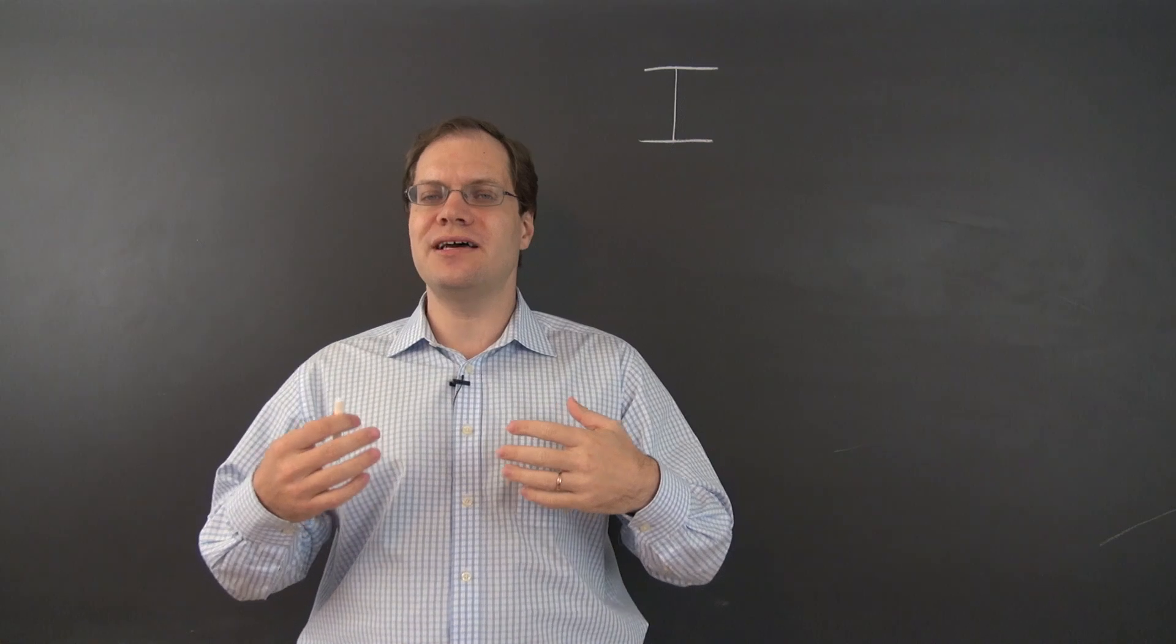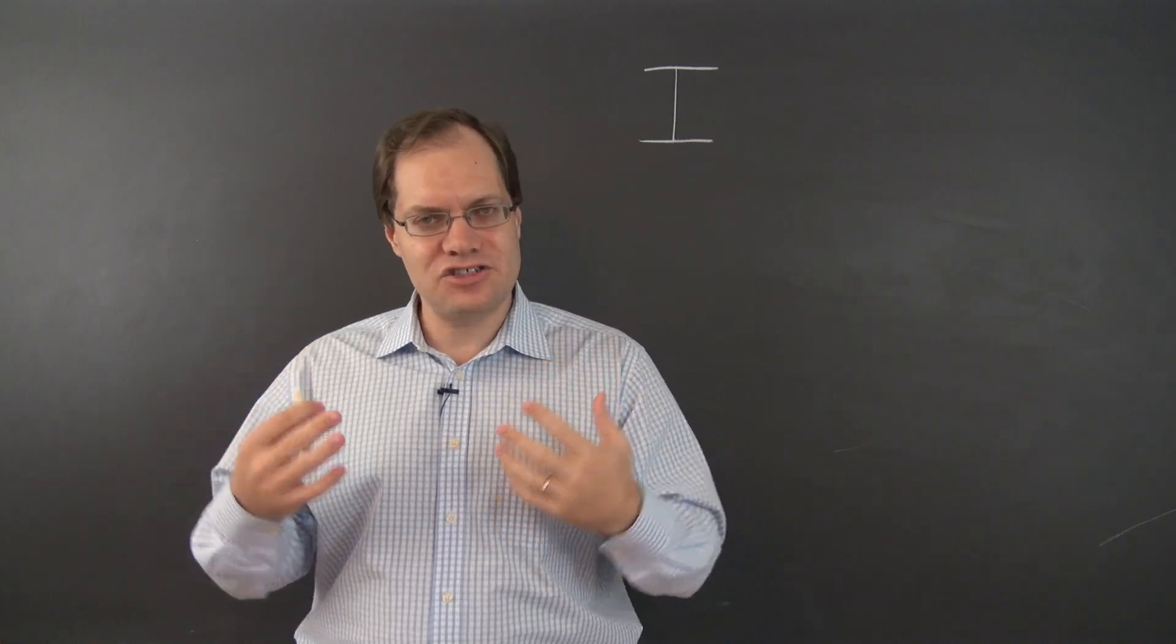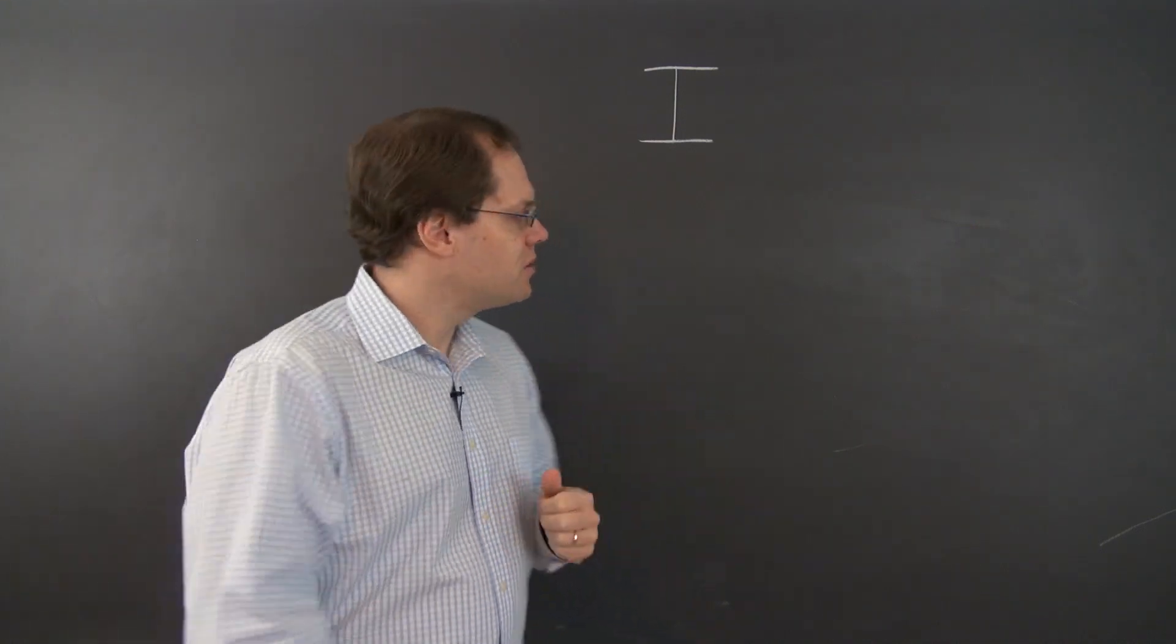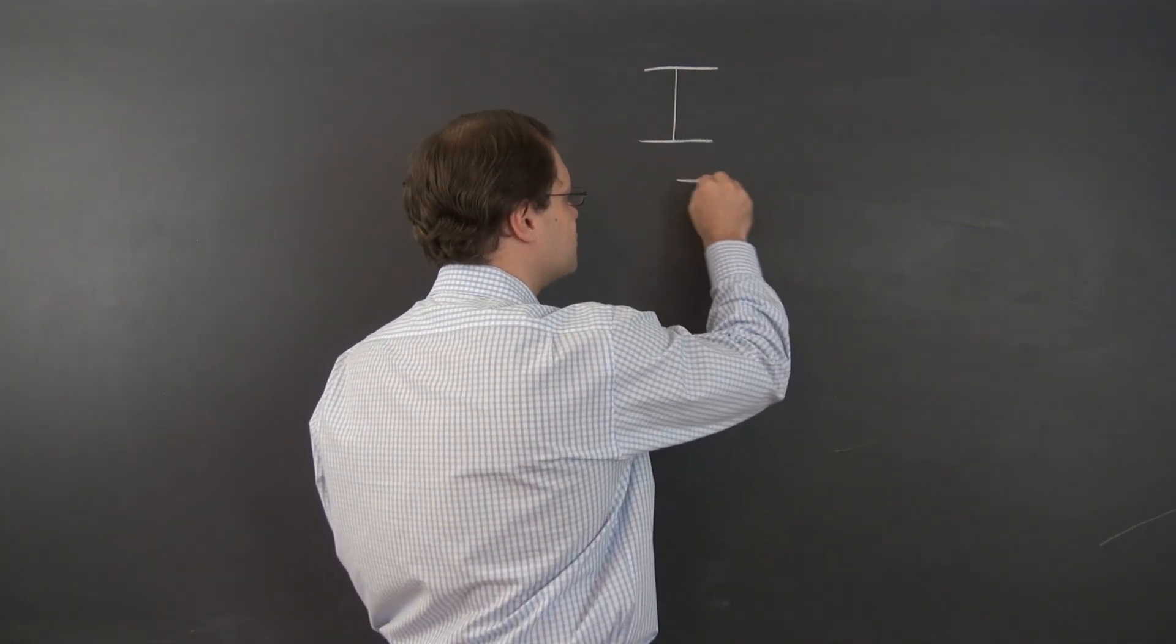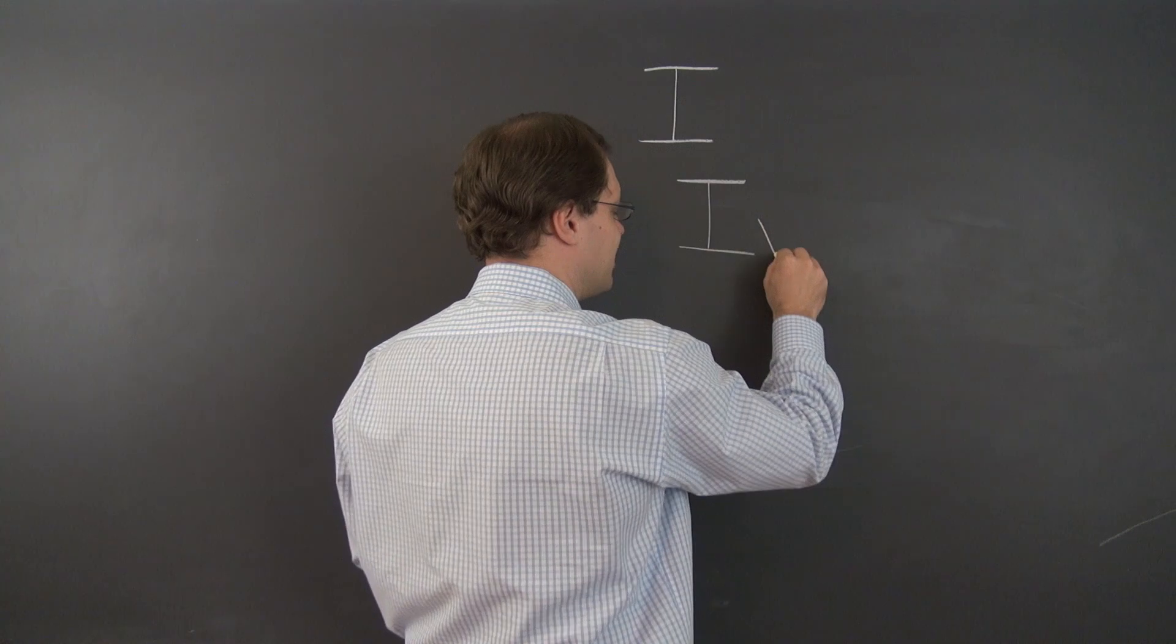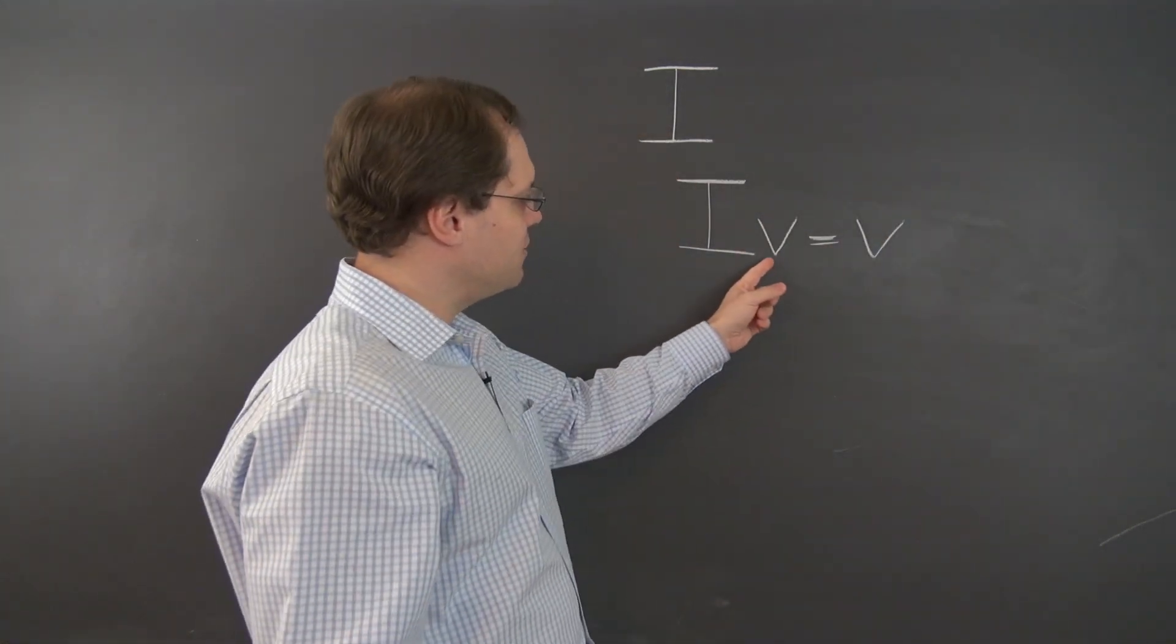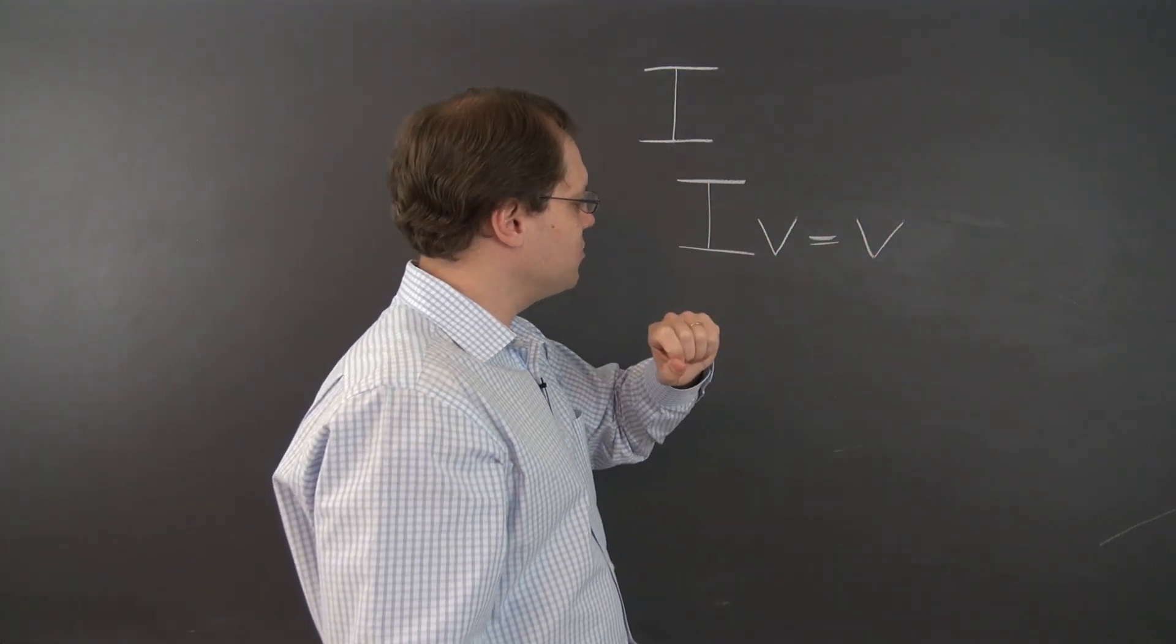And it is defined as the transformation that leaves every vector unchanged. Whatever the input, that's the output. So if I had to define this transformation algebraically, I would write IV equals V. So whatever the input vector is, that's the output vector.